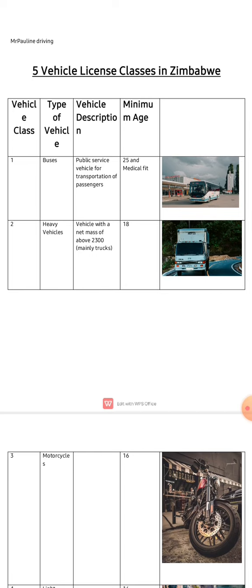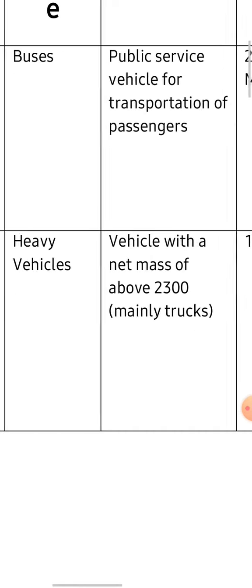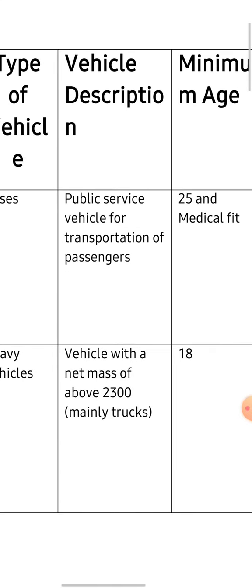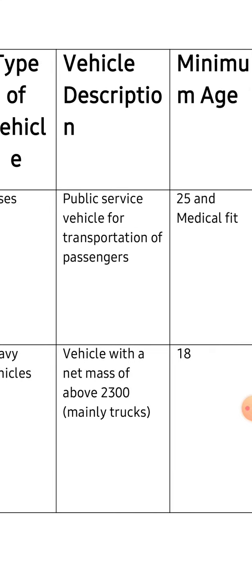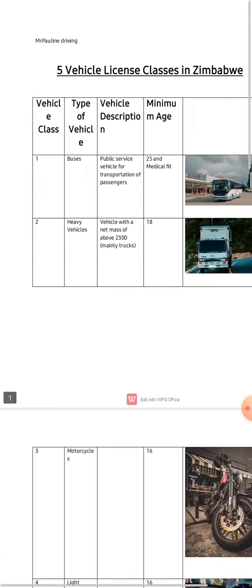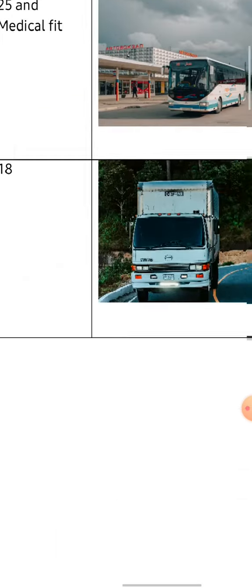Let's go to class two. Class two is for heavy vehicles. A heavy vehicle is a vehicle with a net mass of above 2300 kilograms. For you to attain a class two driver's license you need to be 18 years or above.